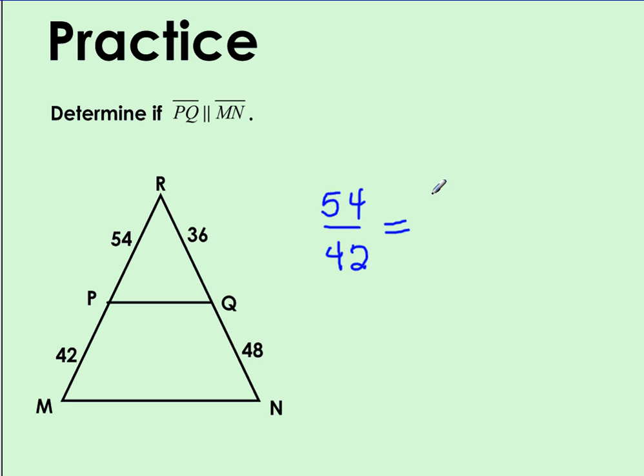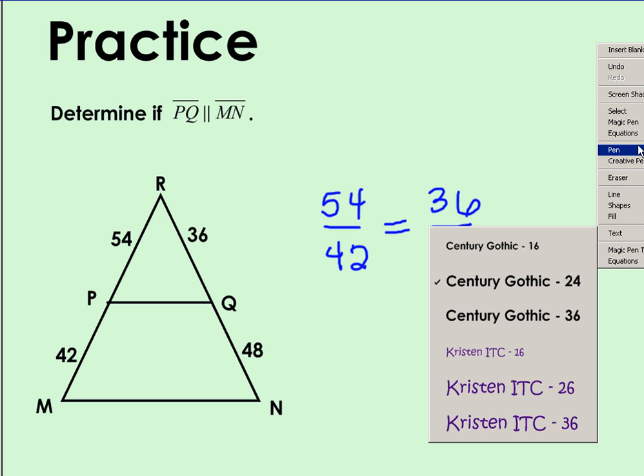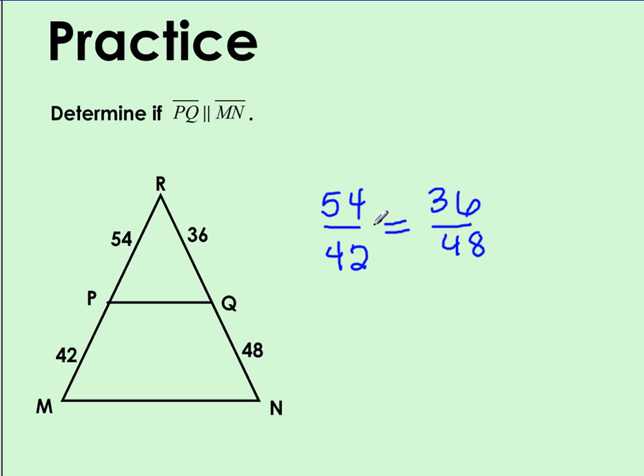So my proportion that I will check is 54 over 42, and I'm going to set that equal to 36 over 48. When I cross multiply, if I find that the products are equal to one another, then I can say that those lines are parallel because the sides are proportional. So I will take 54 times 48 and check that with 42 times 36.